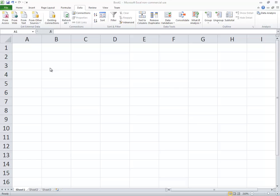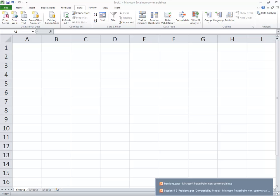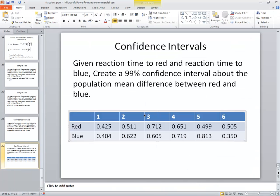Let's take a look at finding a confidence interval about the difference of means of matched pair data. Specifically, this is the problem we'll look at. Given reaction time to red and reaction time to blue, create a 99% confidence interval about the population difference between red and blue.